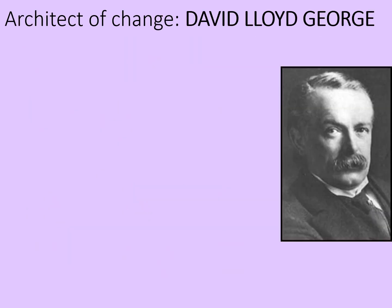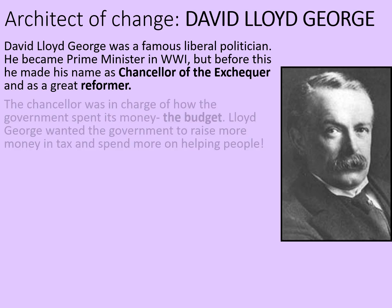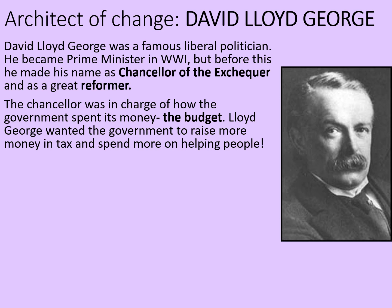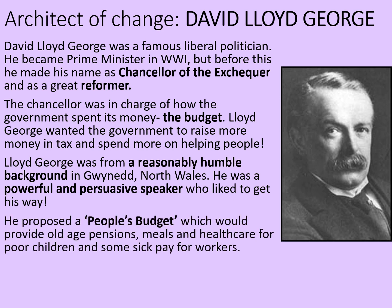The architect of this change was David Lloyd George, a famous Welsh Liberal politician. He became Prime Minister in World War One, but before this he made his name as Chancellor of the Exchequer and as a great reformer. The Chancellor was in charge of how the government spent its money — what they called the budget. Lloyd George wanted the government to raise more money in tax and spend more on helping people. He was from a reasonably humble background in Gwynedd, North Wales, and was a powerful and persuasive speaker. He proposed a People's Budget which would provide old age pensions, meals and healthcare for poor children and some sick pay for workers — all really quite new ideas.